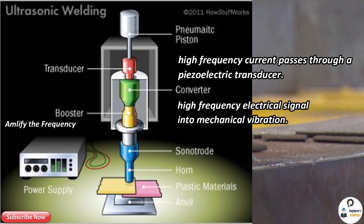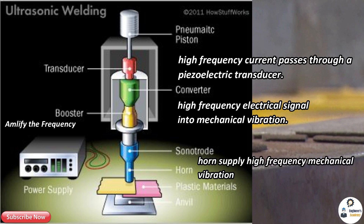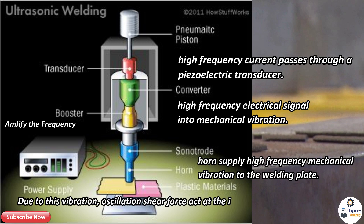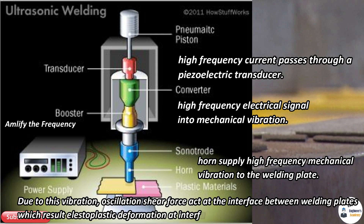This welding creates a lap joint. One plate of the weld is fixed into the fixture and the other one is in direct contact with the horn. These plates are fixed under moderate pressure force. The horn supplies high frequency mechanical vibration to the welding plate. Due to this vibration, oscillating shear force acts at the interface between the welding plates, resulting in plastic deformation at the interface.